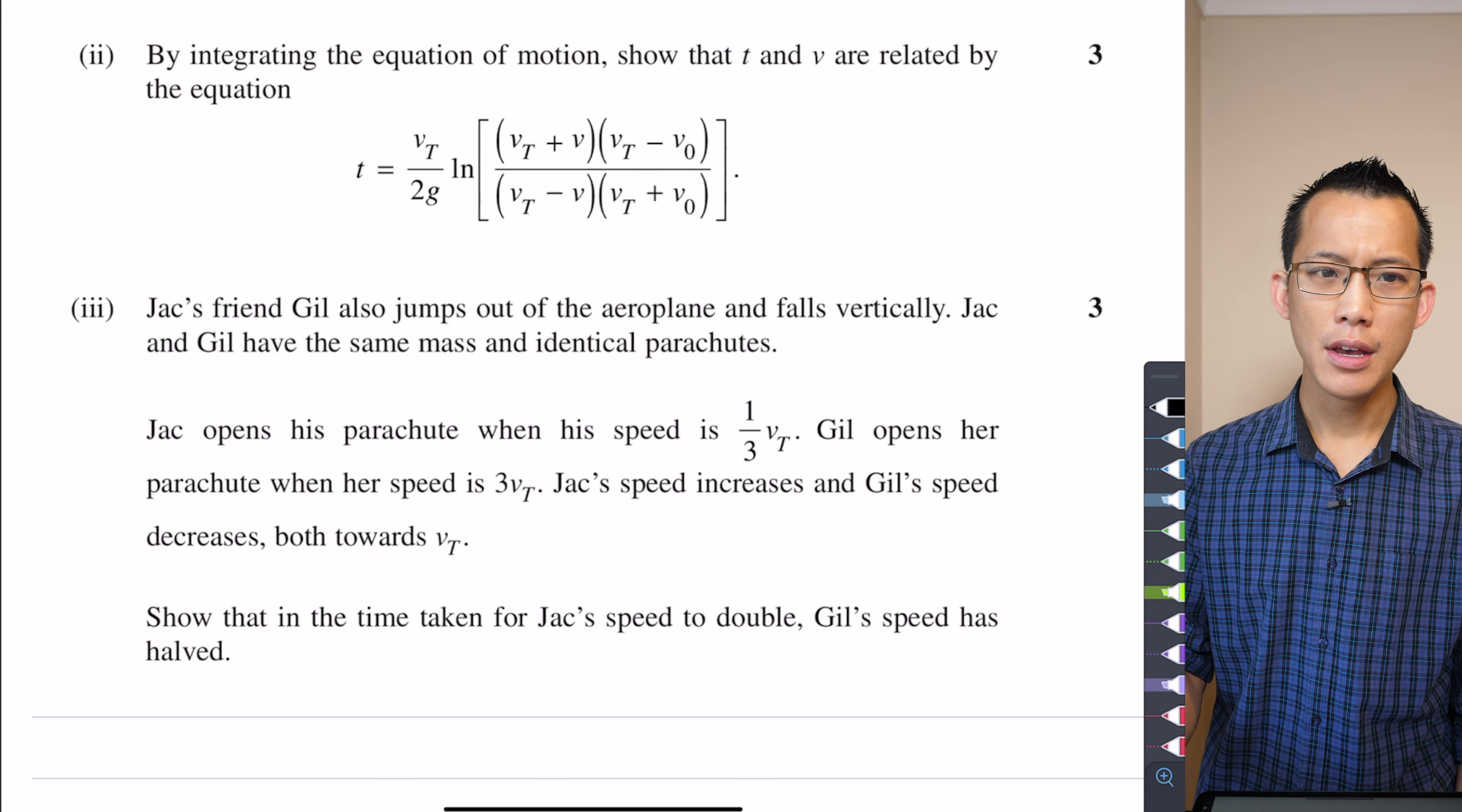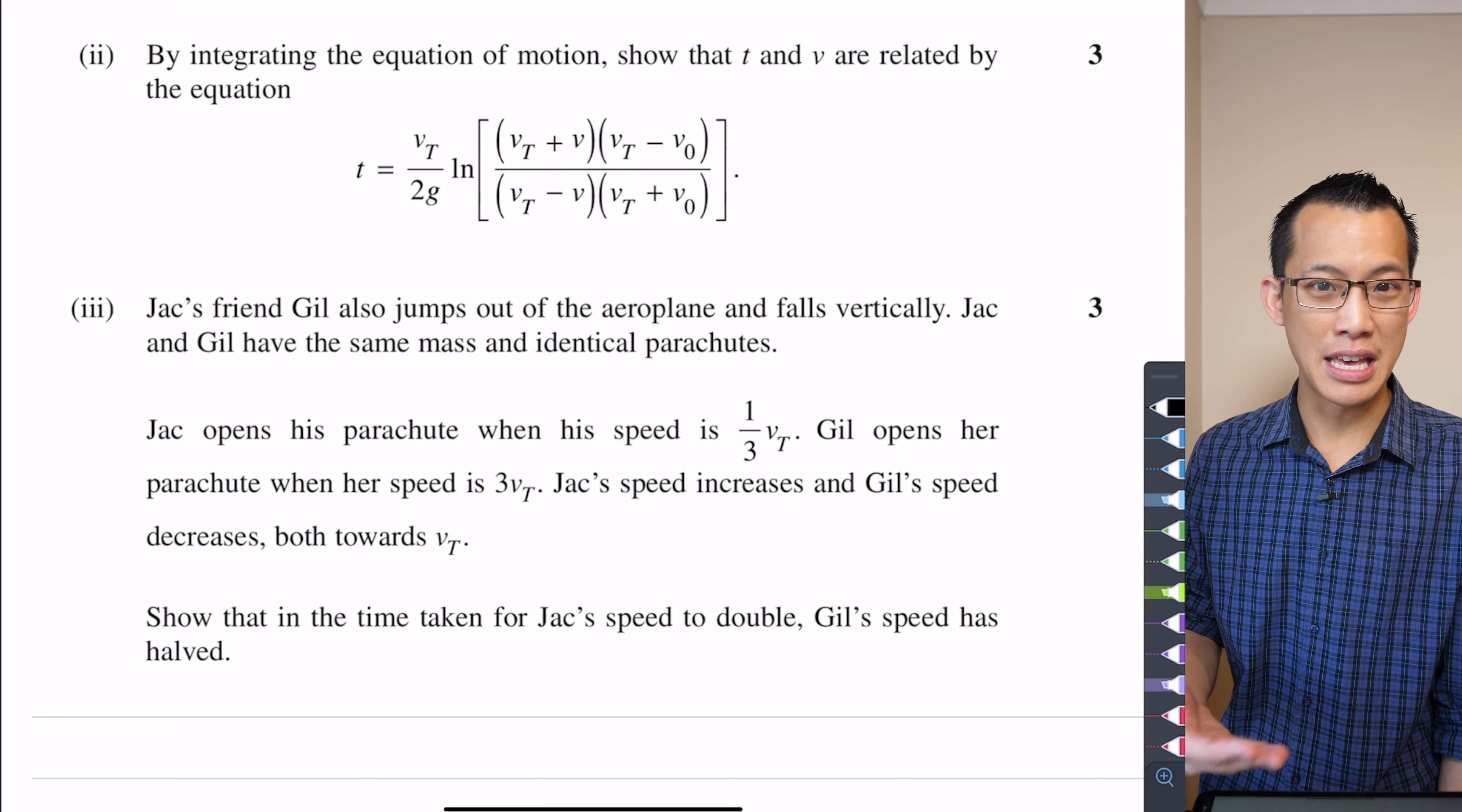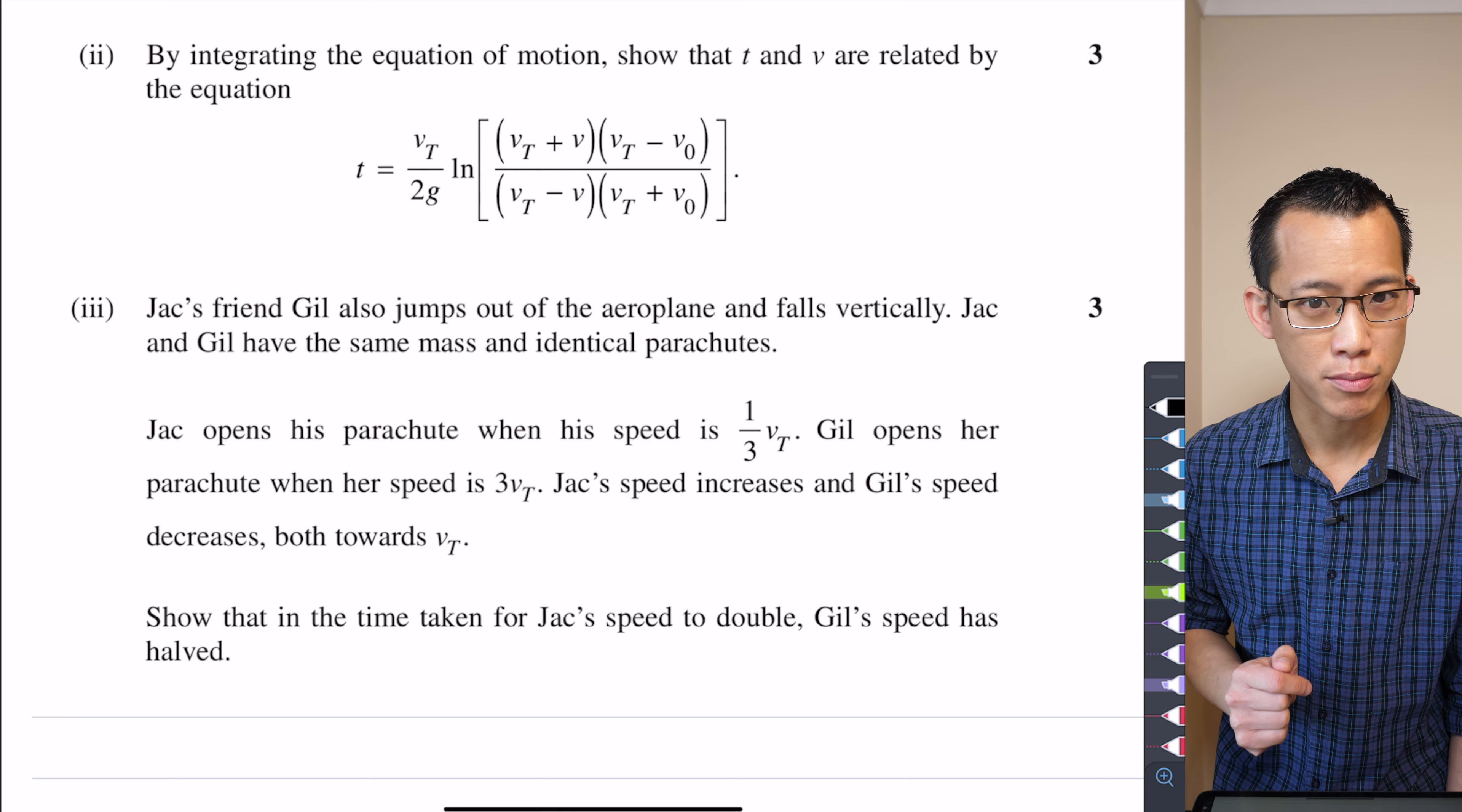When you have a look at part two, it says by integrating the equation of motion. So they give you a big fat, like go in this direction. They don't leave it up to chance and they've even chosen, they've even designated the form for acceleration, which is often a classic part of the question, like tell me which form is the most appropriate, right?